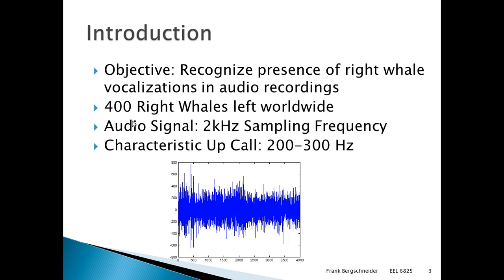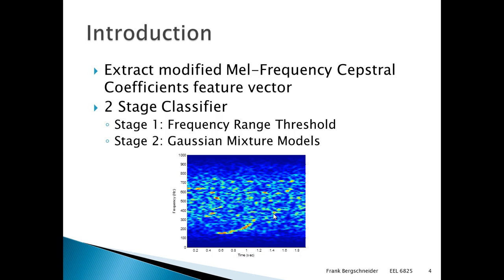Below on the graph you can see an unprocessed RAW file — these files are also saved in an AIFF format. The approach taken for the feature vectors is a modified mel-frequency cepstral coefficient feature vector approach. For the classifier, we're using a two-stage classifier with the first stage being a frequency range threshold classifier and the second stage being a Gaussian mixture model. In the figure, you can see a spectrogram of the above whale call, which actually contains the distinctive right whale upcall.